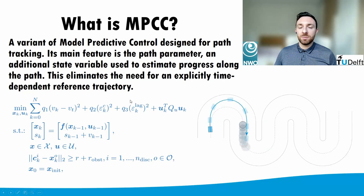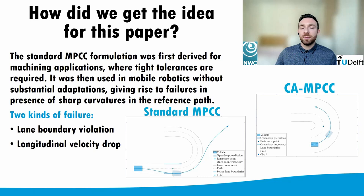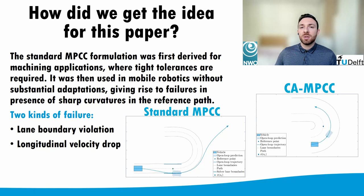So how did we get the idea for this paper? MPCC has been around for a while — it was developed around 2010 in the context of machining, for example cutting metal sheets using a laser or a water jet. It was soon after also applied for mobile robotics without any substantial modifications. However, in machining, very small deviations from the path are allowed, since that is the key parameter for assessing cut quality. In the context of mobile robotics, however, larger deviations from the path are allowed because it doesn't need to be tracked as precisely.